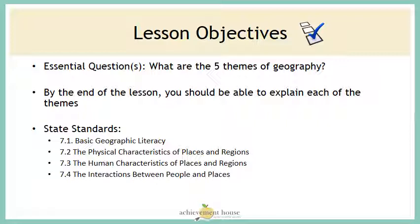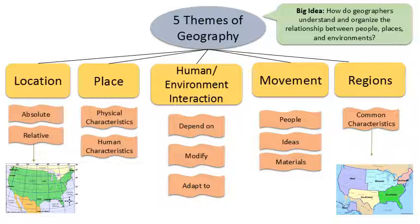Our lesson objective today is to learn about the five themes of geography. By the end of the lesson you should be able to give a brief description of each theme. This flowchart shows an overview of our five themes. We're going to be going into this flowchart in detail over the next couple of weeks, but for this lesson today we're going to be talking about each theme in the yellow box, giving you an overview of location, place, human-environment interaction, movement, and regions.